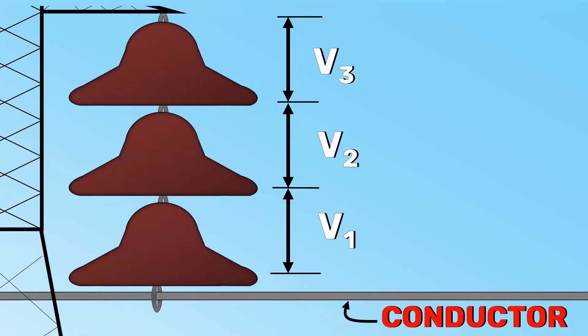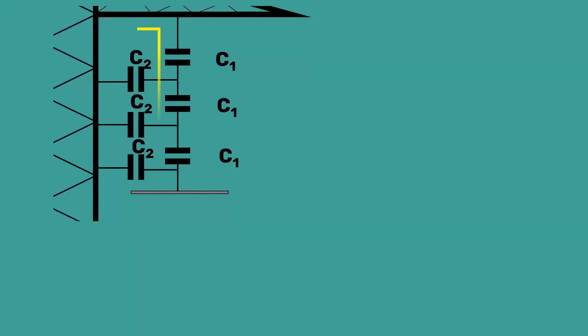Finally, let's discuss our third method. The uneven distribution of voltage is mainly due to the presence of shunt capacitance. Just imagine that there is no shunt capacitance.